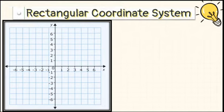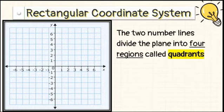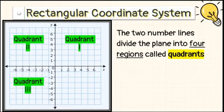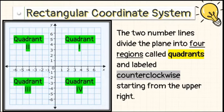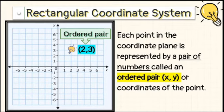The two number lines divide the plane into four regions called quadrants, which are numbered in sequence as quadrant 1, quadrant 2, quadrant 3, and quadrant 4, and labeled counterclockwise starting from the upper right. Each point in the coordinate plane is represented by a pair of numbers, called an ordered pair, or coordinates of the point.